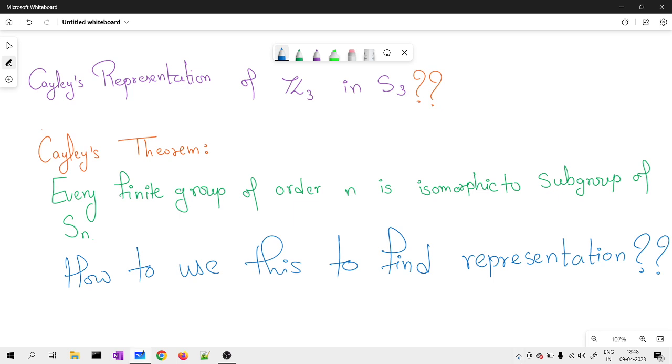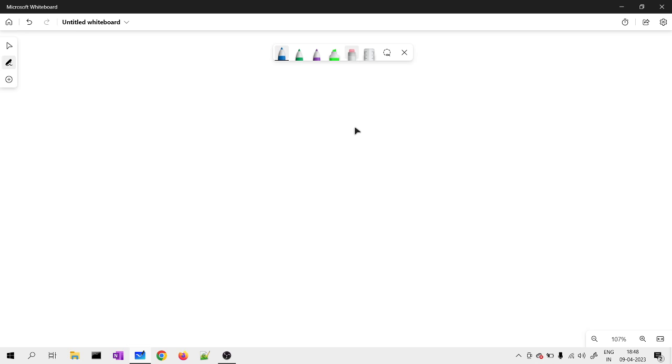Here, I have to find out a subgroup of S3, for example H, which is isomorphic to Z3. So, this Cayley's representation means you are interested in finding out this subgroup which is isomorphic to Z3. Now, it looks difficult but it is one of the simplest questions.